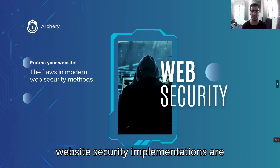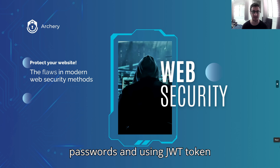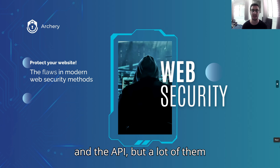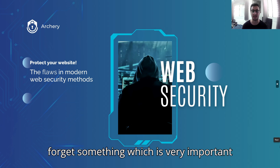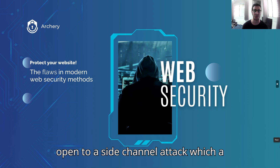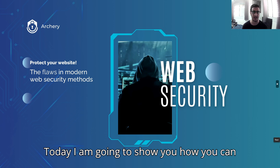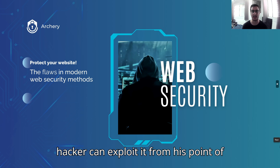Modern website security implementations are nice but not good enough. Most people secure their websites by hashing passwords and using JWT tokens to prevent access to the website and the API, but a lot of them forget something very important — leaving their website open to a side channel attack which a skilled hacker can exploit easily. Today I'm going to show you how you can fix this security flaw and how a hacker can exploit it from his point of view.